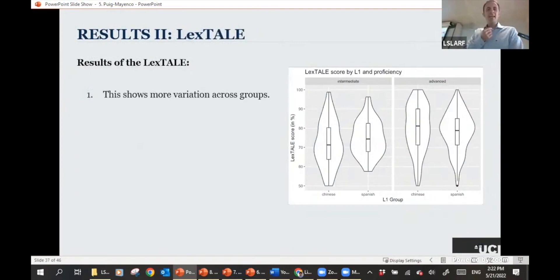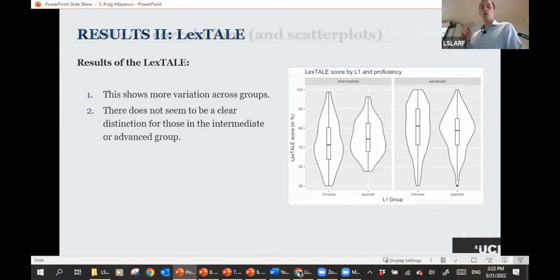Then we've got the results of the LexTALE. And what we already see is that it shows much more variation across groups, because we're using that categorization in the first task to examine the LexTALE. And that already tells us that intermediate participants could score at 100% accuracy in the LexTALE. So there does not seem to be a clear distinction for those in the intermediate group.